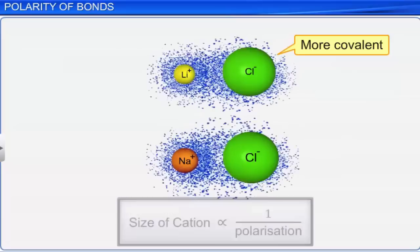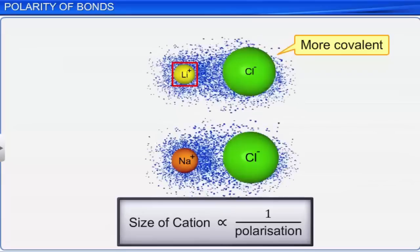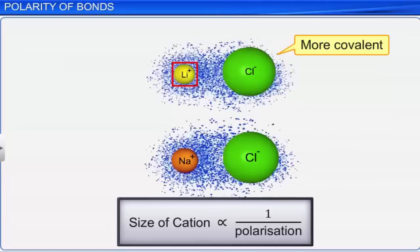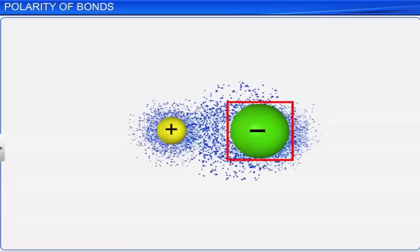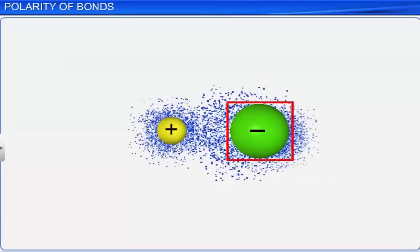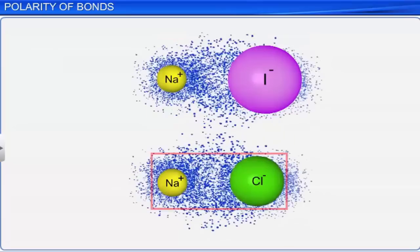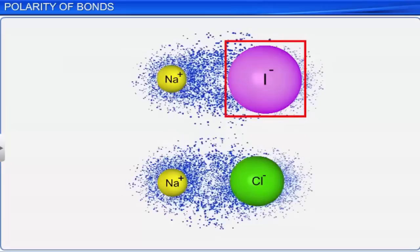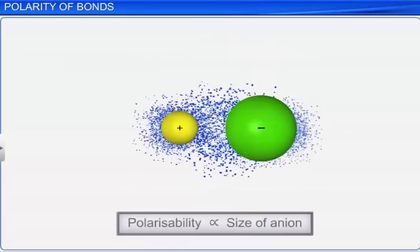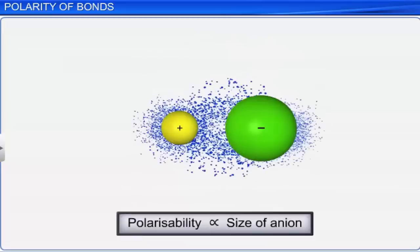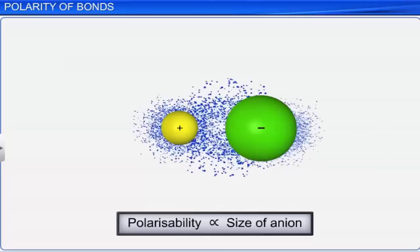The smaller cation has a higher electron density and hence it can distort the electron cloud of the anion easily. The larger the size of the anion, the greater is the covalent character of the ionic bond. For example, sodium iodide is more covalent than sodium chloride because the iodide ion is larger than the chloride ion. For an anion of large size, the electron cloud is loosely bound and hence can be easily distorted by the cation.